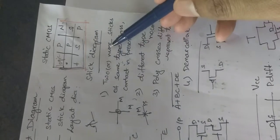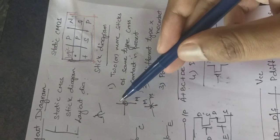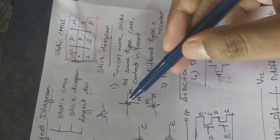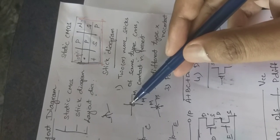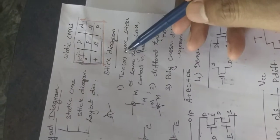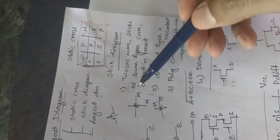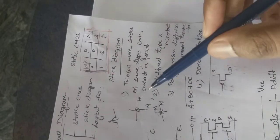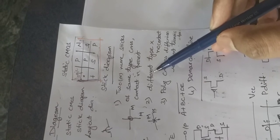The first rule: if two or more sticks of the same type cross each other — for example, two metal lines crossing — then at the intersection point there is always a connection between them. You must ensure no metal line crosses another unless a connection is actually needed. If it is drawn without a needed connection, it is considered a short circuit.